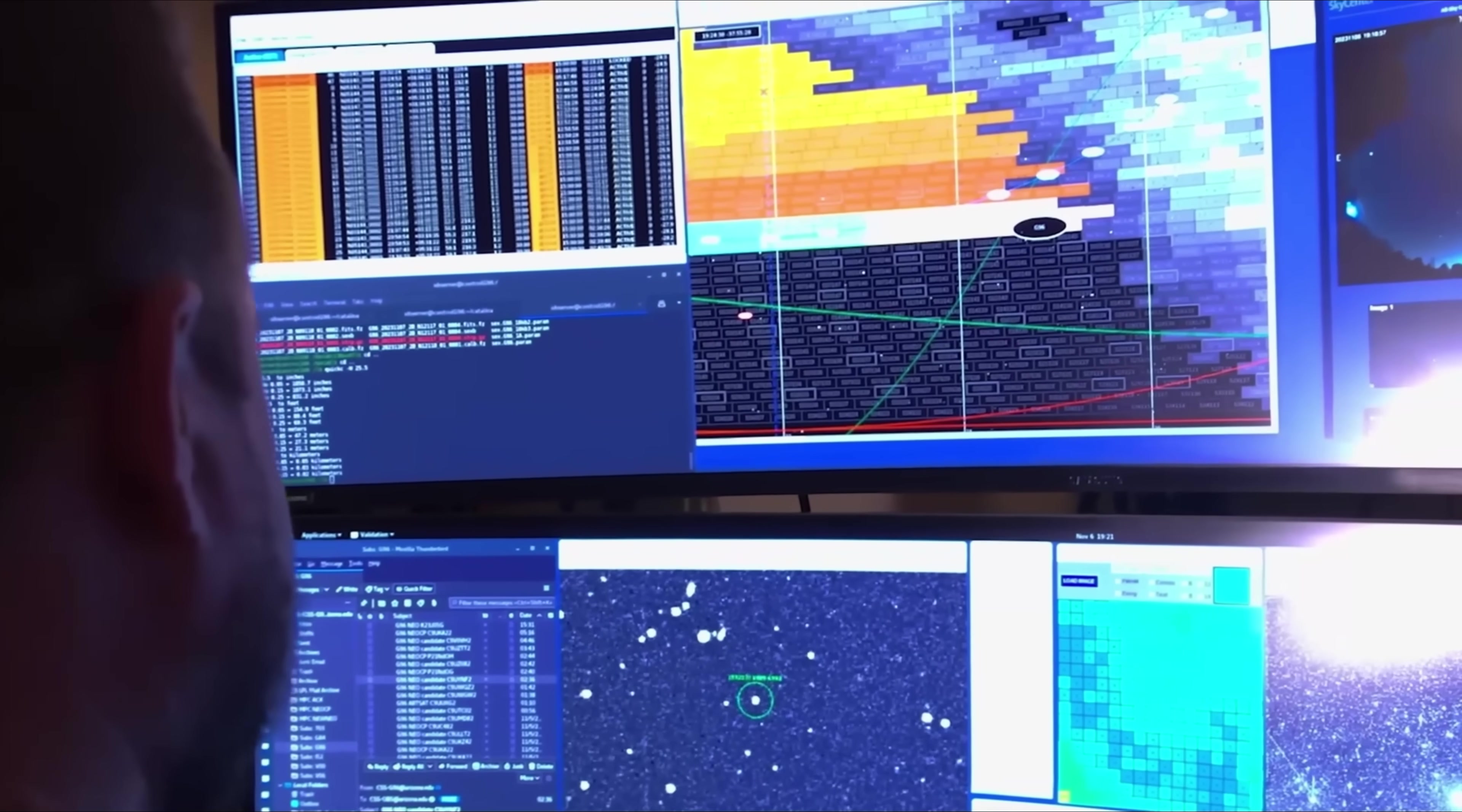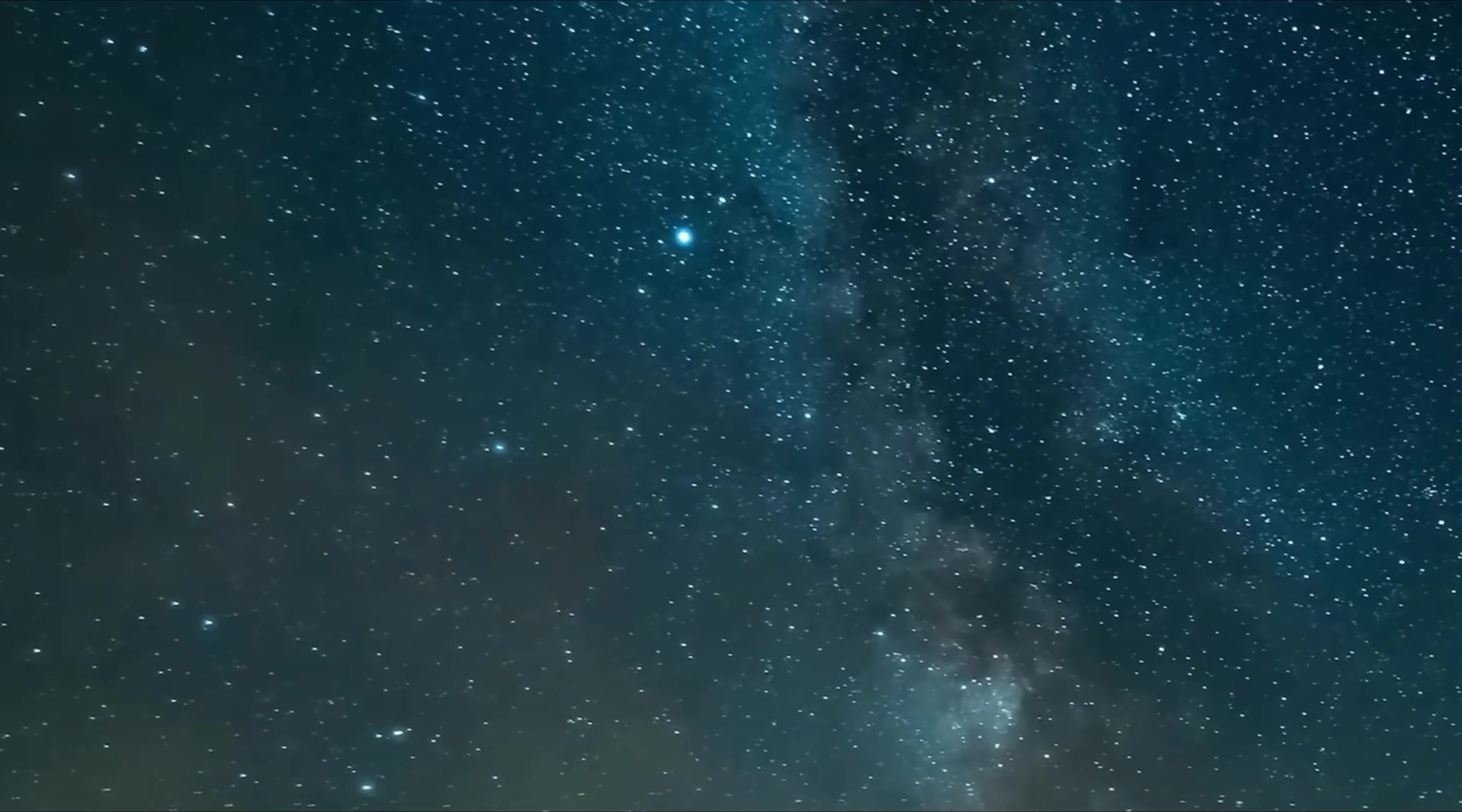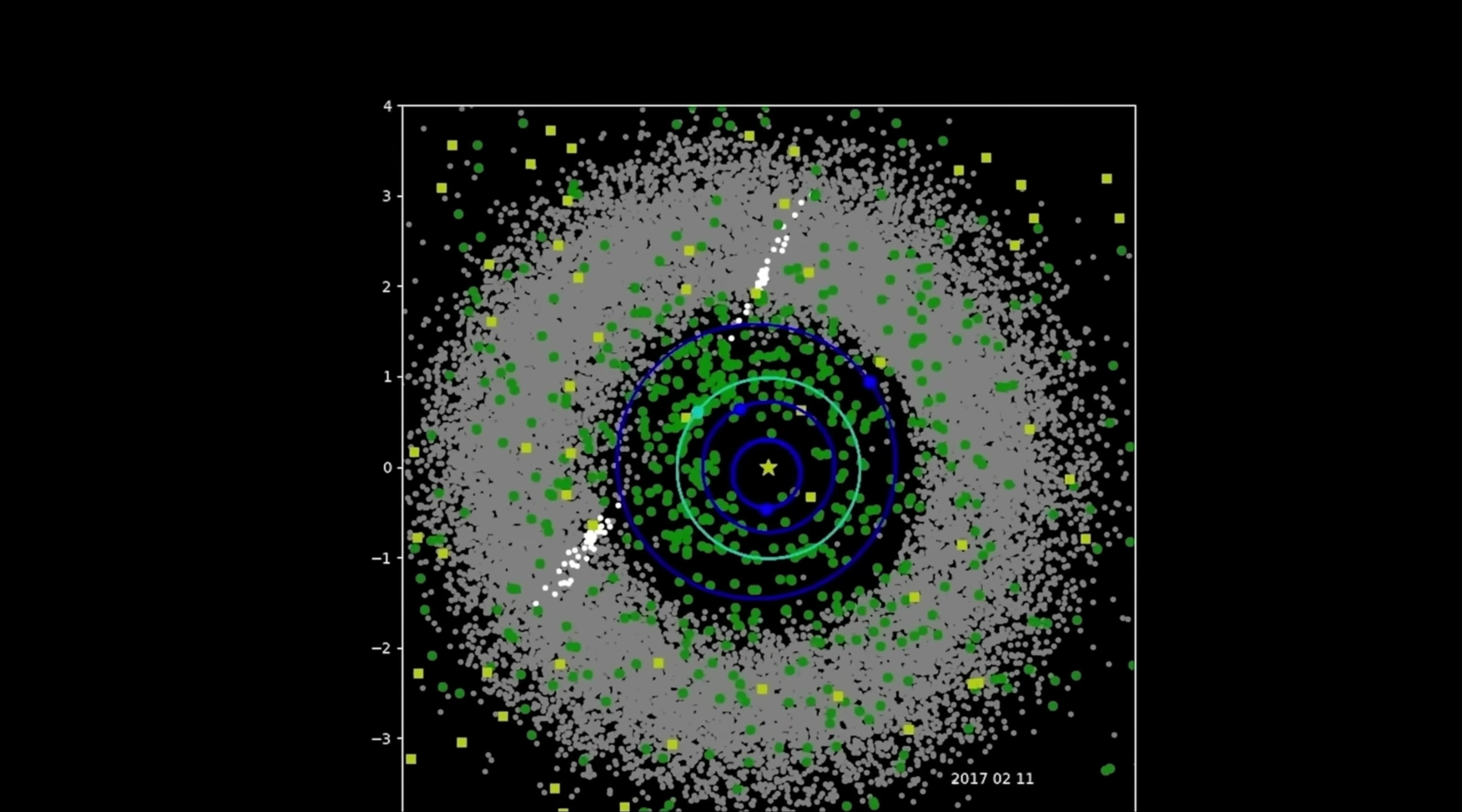Despite the exquisite sensitivity of the search, the result was a definitive non-detection. The initial pass of the data flagged thousands of hits, a standard occurrence due to the density of Earth's radio environment. However, the rigorous filtration process rapidly whittled these candidates down. Signals that appeared in the off-source direction were discarded. Signals that did not exhibit the precise Doppler drift consistent with the trajectory of 3I/ATLAS were eliminated. Finally, the remaining candidates were cross-referenced against databases of known satellites and orbital debris. One by one, the potential technosignatures were identified as human-made interference. At the conclusion of the analysis, not a single signal remained that could be attributed to the interstellar visitor. The object was radio silent.